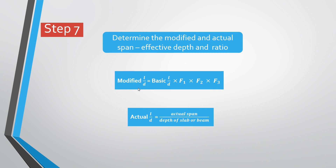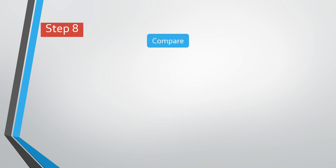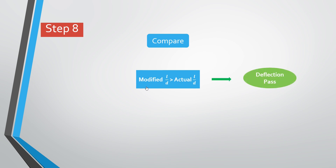Once you have the modified span-to-effective depth ratio, you also determine the actual span-to-effective depth ratio. For a slab, the actual ratio is the short span divided by the effective depth of the slab. For a beam, it is the span of that beam divided by the effective depth of the beam. You then compare the two values: if the modified span-to-effective depth ratio is greater than the actual, the deflection check passes and there is no cause for concern.